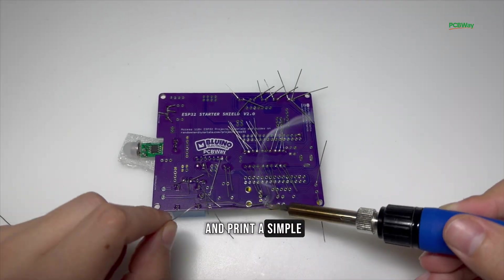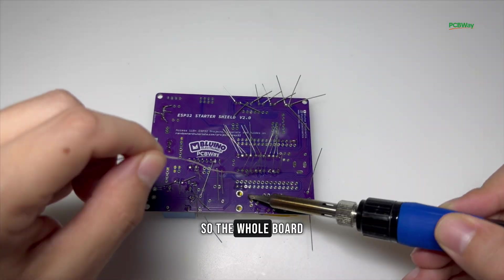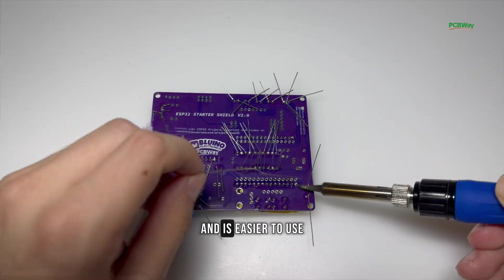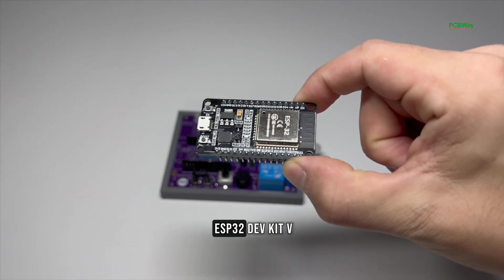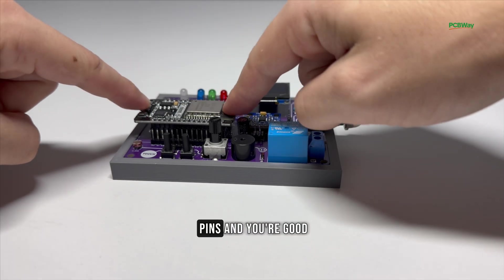You can also design and print a simple 3D printed base, so the whole board sits nicely on a desk and is easier to use. Now you only need to plug in the ESP32 DevKit V1 into the header pins and you're good to go.